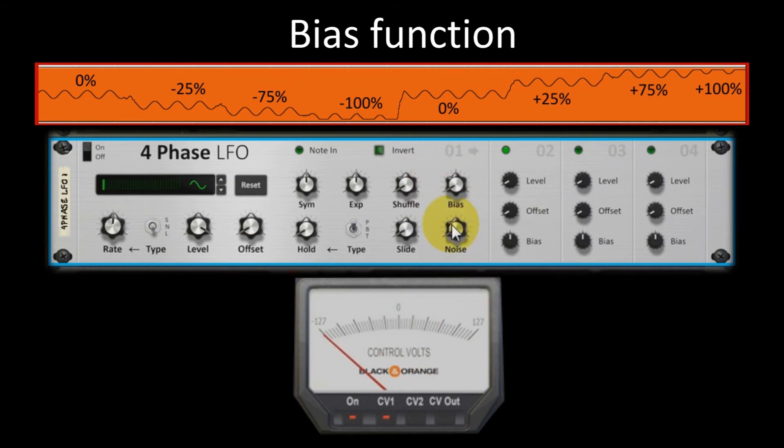The bias function is used to move the central axis up and down.